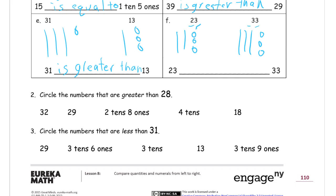But we're starting with 23, so we can't just cross out and change it. So 23 is not greater than 33, it's not equal to 33. So 23 is less than 33.